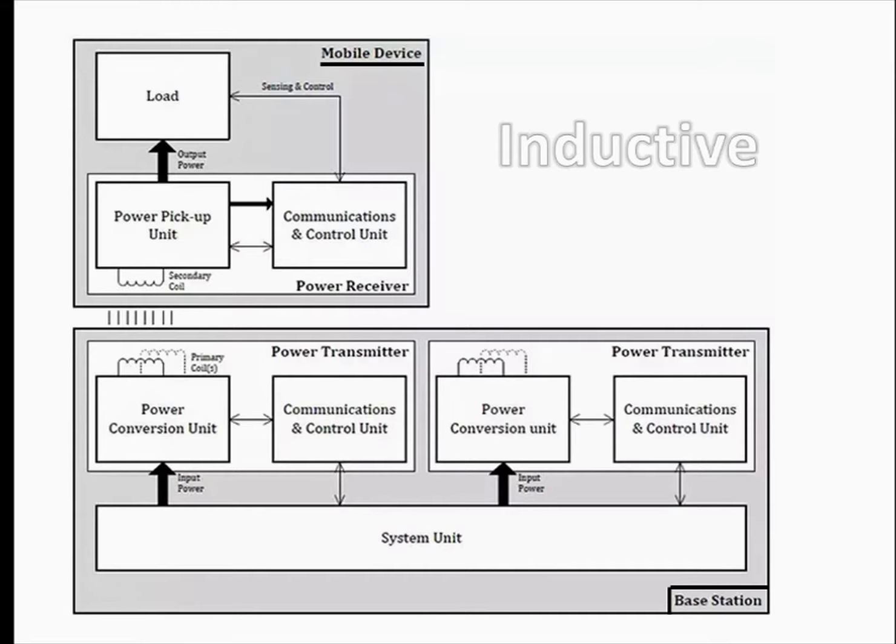Base station receives power from the external source and the system unit sends it to the power conversion unit, which has the primary coil and the whole unit is the transmitter. The receiver has a power pickup unit with secondary coil and both of them have communication and control unit. You can keep more than one device as there is more than one primary coil unit.